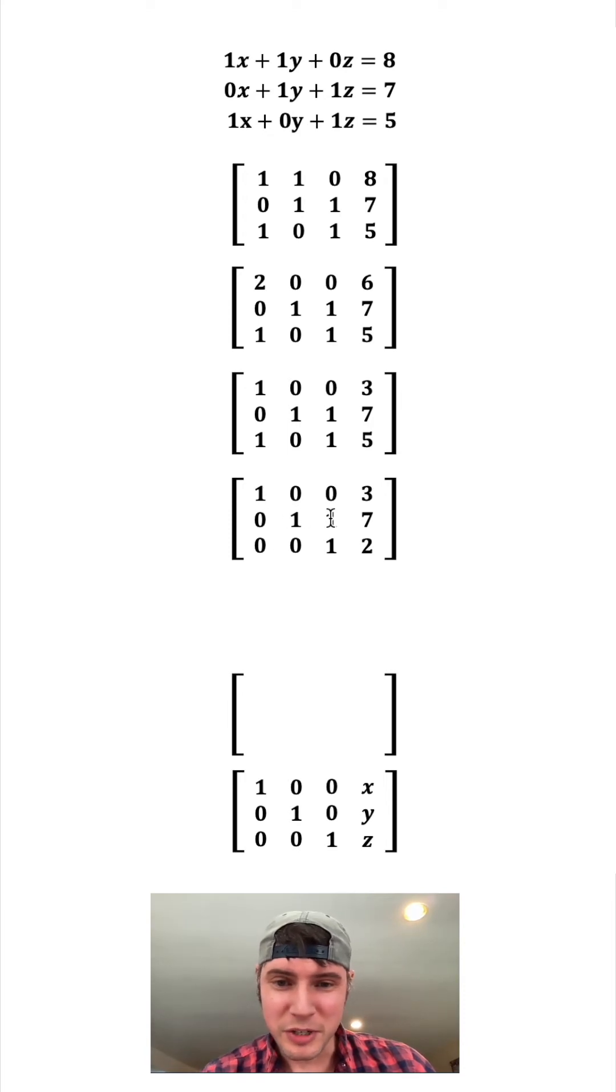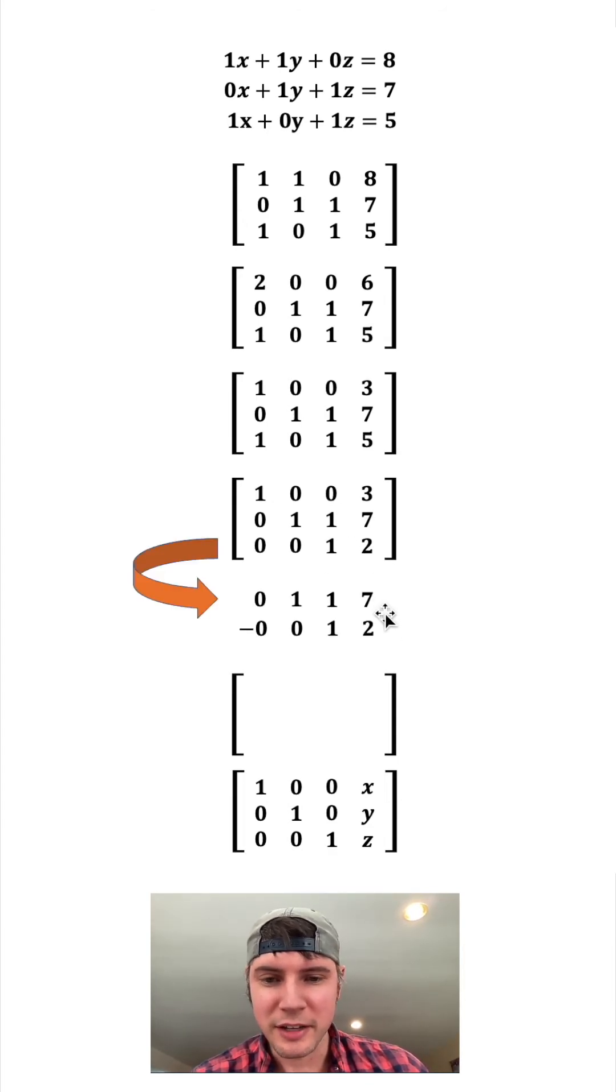Now we're really close to what we're trying to get. We just still have this 1 right here we want to get rid of. I can see if I subtract the third row from it, this will become a 0. So I'm going to copy these two rows down, and my answer is going to be the new row 2.